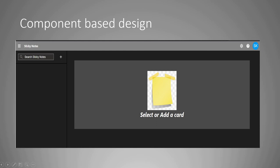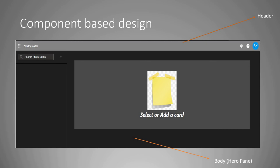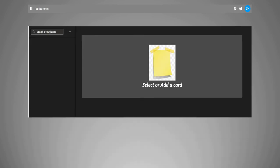Now we'll look into component-based design. This is what we're going to build. If you see this particular screen, you see one header at the top, and then the rest of the part. I divide it like that — you have a header and then the rest, which I call the hero pane. 'Hero' is terminology being used in the industry.